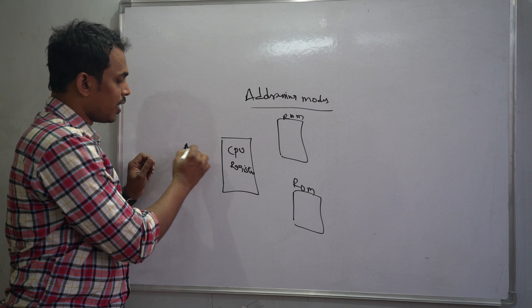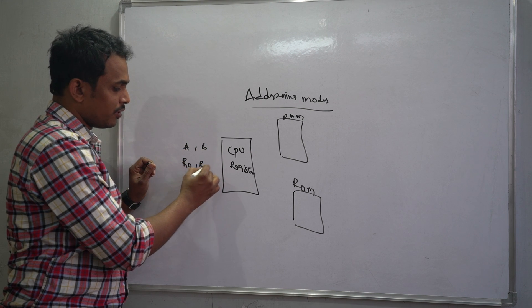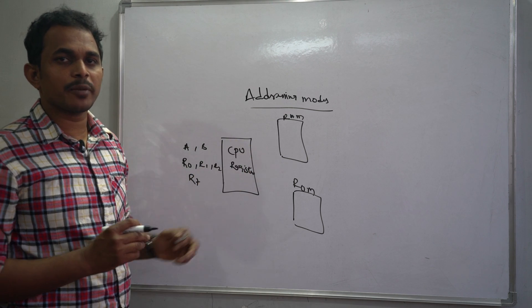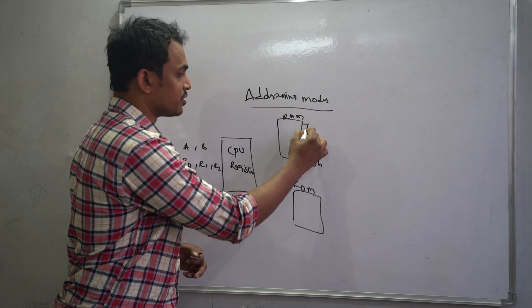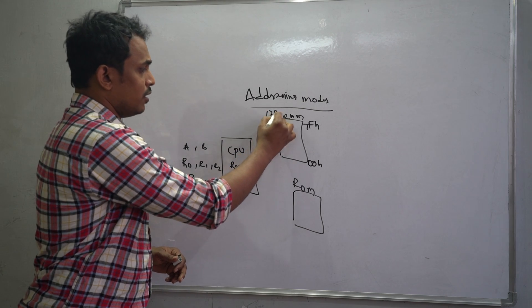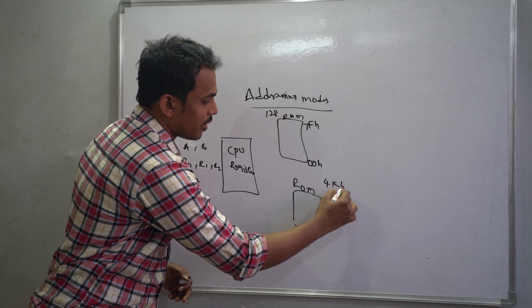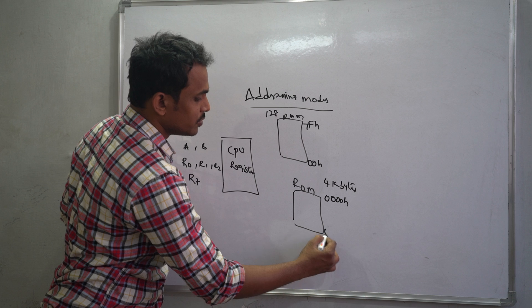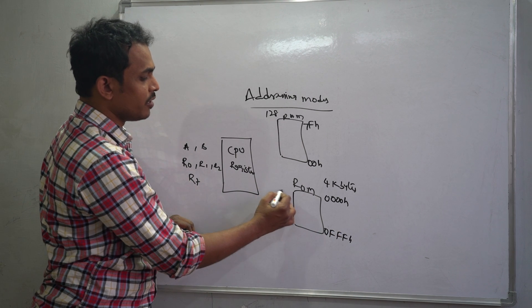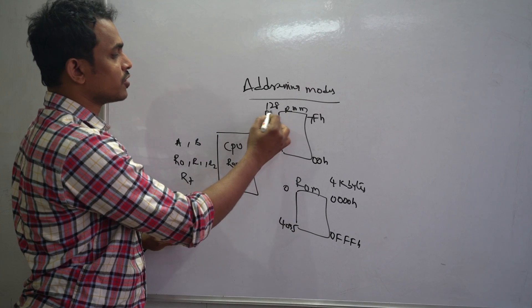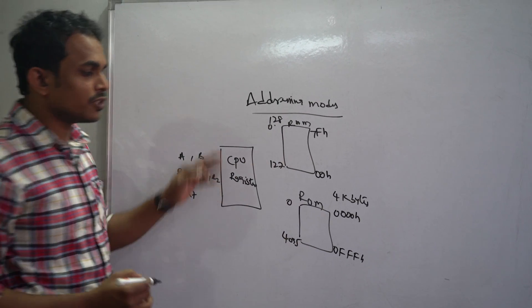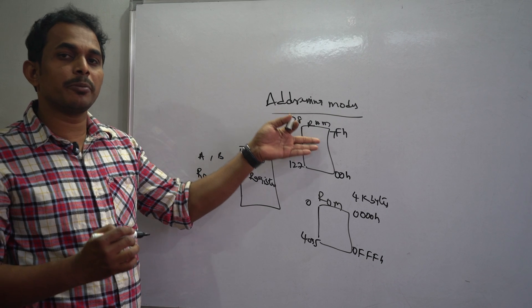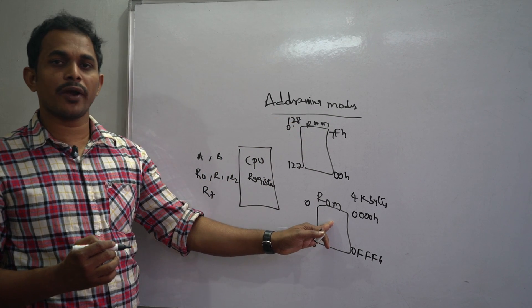The CPU has a limited number of registers: A, B, R0, R1, R2, and so on. The RAM memory supports 128 bytes, from address 00H to 7FH. The ROM memory supports 4 kilobytes, with addresses from 0000H to 0FFFH, which in decimal is 0 to 4095.